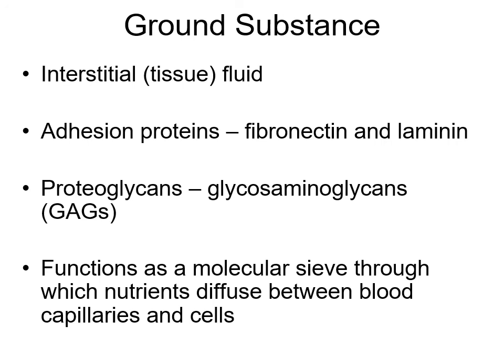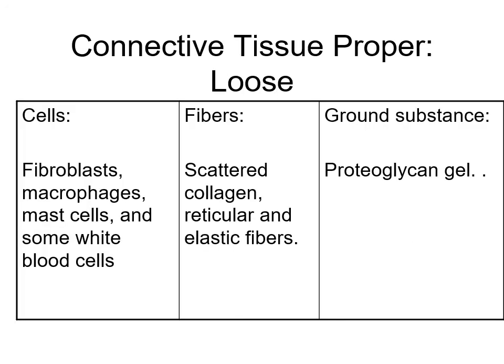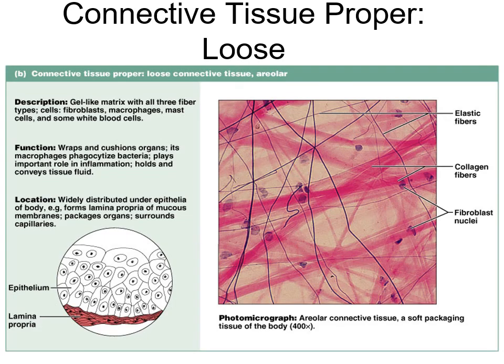The ground substance of connective tissue proper functions as a molecular sieve so that nutrients can diffuse in and out from the capillaries. The loose connective tissue proper is widely distributed under your skin and under any epithelia, helps form the lamina propria of epithelial tissue and mucous membranes, and packages organs and surrounds capillaries.